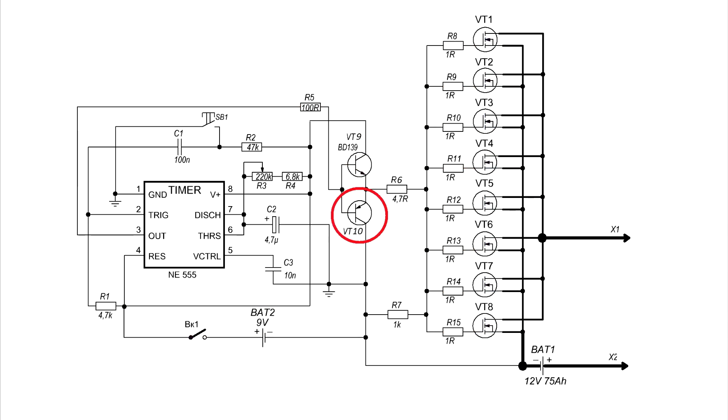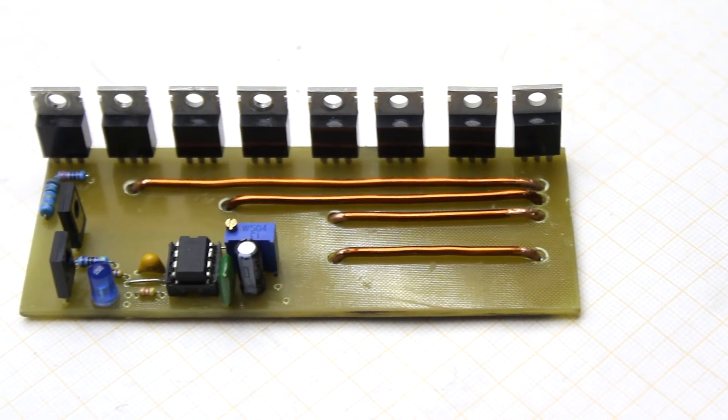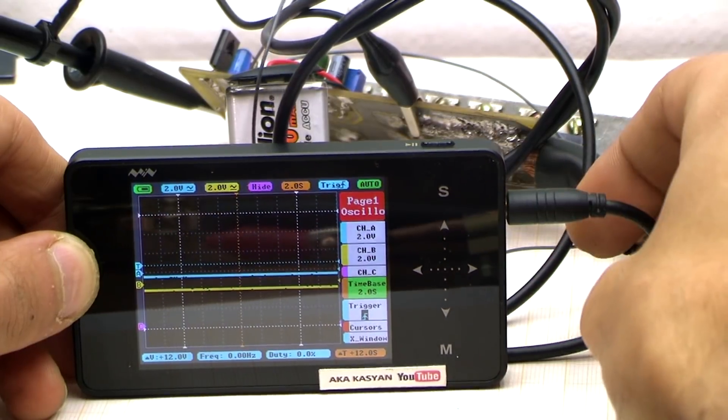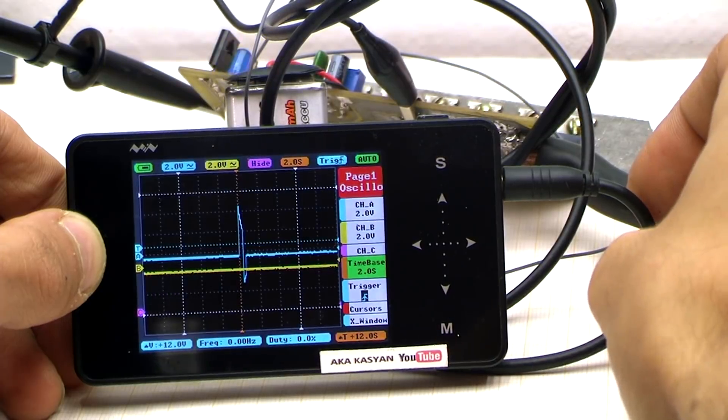The lower transistor is designed for the instantly discharge of the FETs gate to the ground thereby ensuring they are reliable closing. It is better to show the work of FETs on a live example.